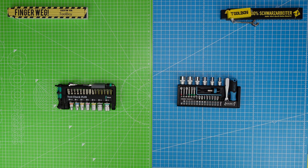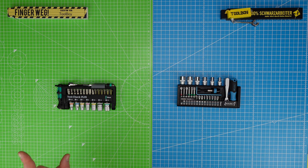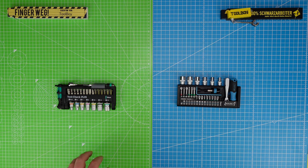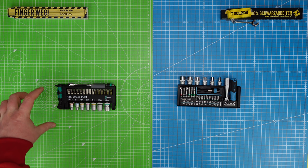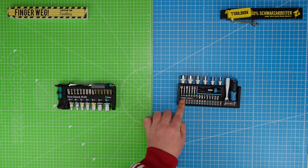In the left corner with the green mat, from Wera Germany, Tool Check Plus with 39 parts, a weight of around 700 grams, retail price of 69 euros but available for about 50. It measures 185 x 75 x 25mm in thickness.